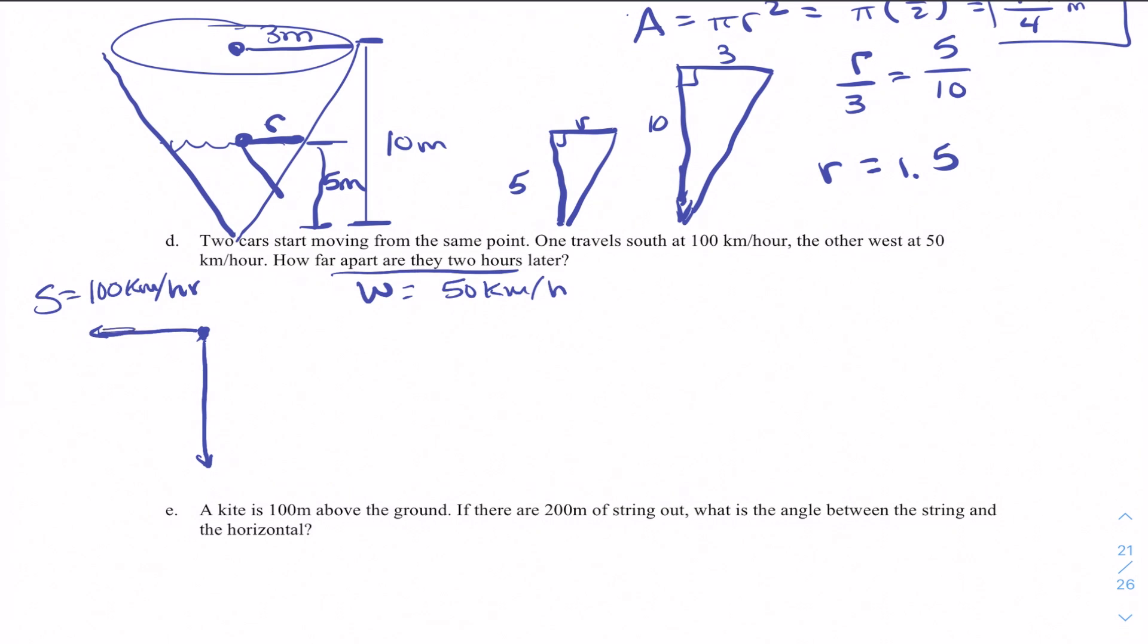How far apart are they after two hours? Okay, well if you're traveling west at 50 kilometers per hour, you've traveled 100 kilometers. Likewise, if you're going south, you traveled 200 kilometers in that hour. And now that allows us to find the distance between those two.